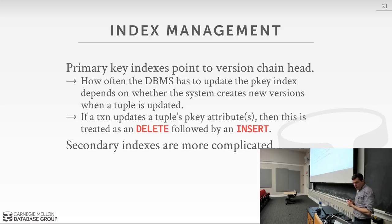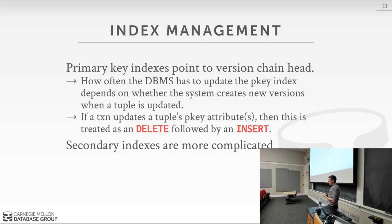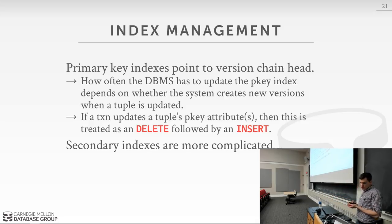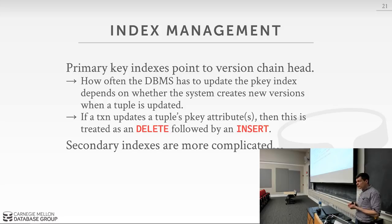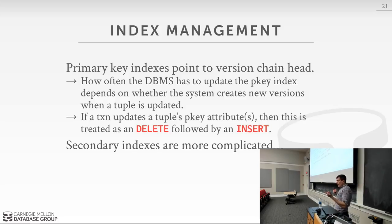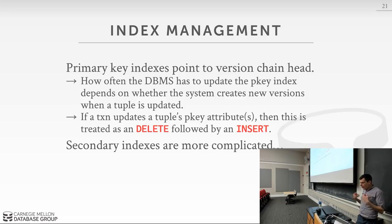The last design decision is indexes. The primary key index always points to the head of the version chain, and any time we create a new version we update that. Things get tricky when you start updating the primary key itself.